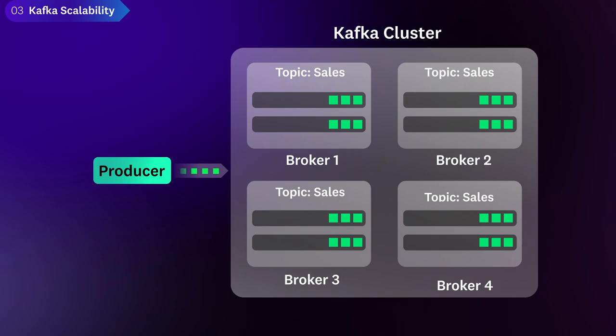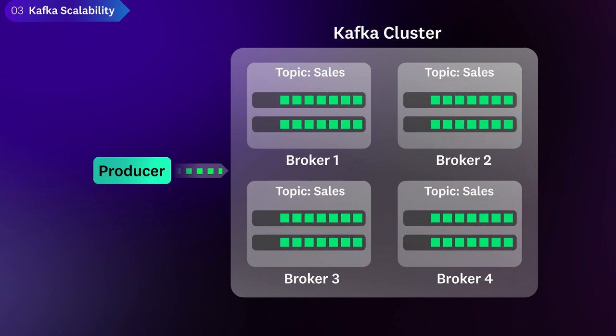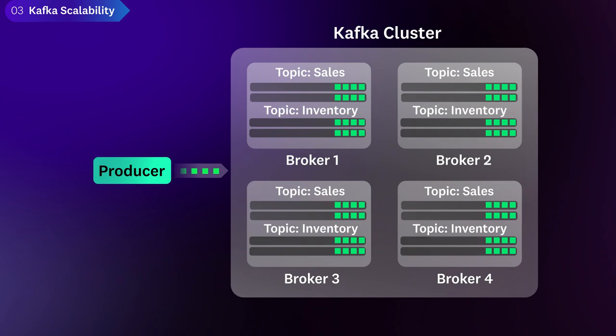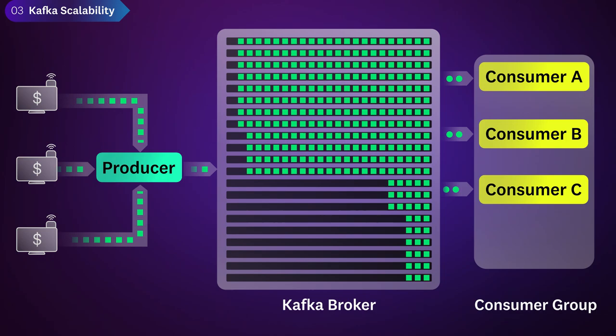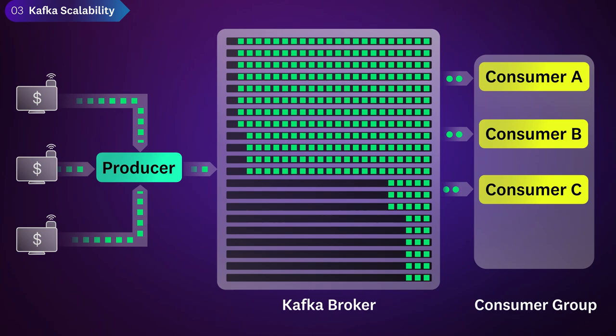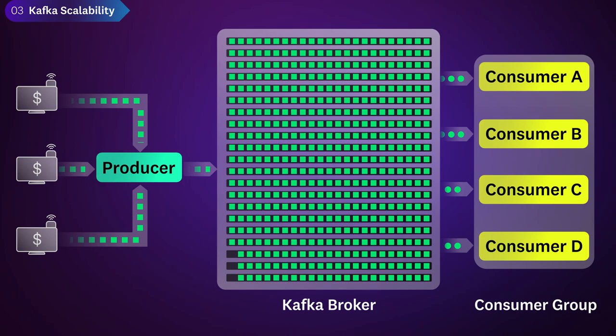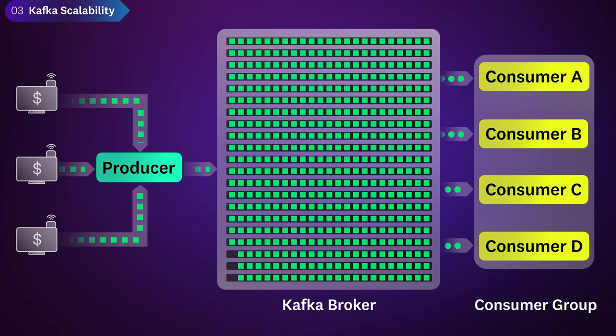Distributing a topic's partitions across many brokers allows the topic to scale well beyond any single host. One cluster of Kafka brokers can host multiple topics, allowing you to scale several unique data streams. Developers specify the number of partitions in each topic, and Kafka will automatically assign the partitions to existing brokers in the cluster. Kafka also enables your consumer applications to process data at scale. Adding consumer instances to a group increases your processing capacity. Kafka brokers will automatically load-balance partitions among the consumer group, so a topic can be processed at scale. Since multiple Kafka consumers can read data in parallel, you can quickly get different types of business insights.